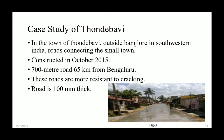Case study of Thondehbhabhi: In the town of Thondehbhabhi, outside Bangalore in southwestern India, a road connecting the small town was constructed in October 2015. It is a 700-meter road located 65 kilometers from Bangalore. These roads are more resistant to cracking and the road is 100 mm thick.